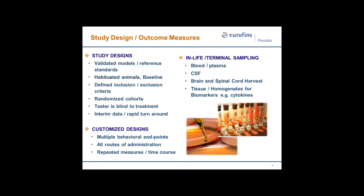We do studies the right way — validated with reference standards. Animals are habituated with inclusion and exclusion criteria, moving animals forward into randomized cohorts with testers blind to treatment. We provide interim data in Excel spreadsheets and accessible final reports online. All designs are customized with multiple endpoints provided it's ethical. We provide all routes of administration, repeated measures over a time course, and can collect blood, plasma, CSF, and terminal samples, or perfuse animals for immunohistochemistry readouts.